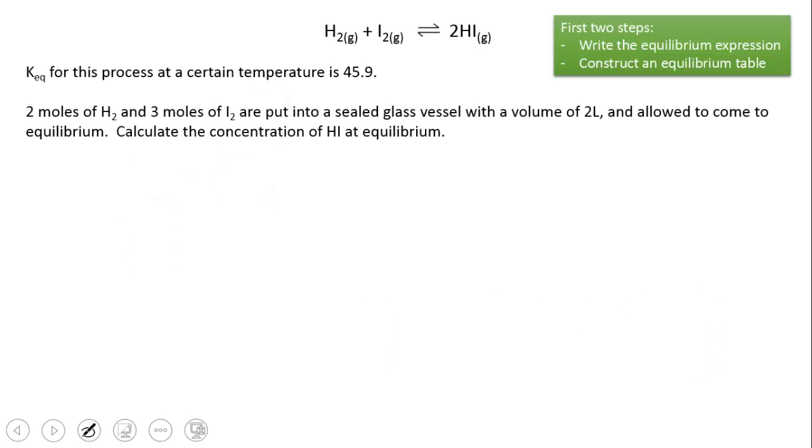We've got the equilibrium between hydrogen, iodine, and hydrogen iodide. Keq for this process at a certain temperature is 45.9. Two moles of hydrogen and three moles of iodine are put into a sealed glass vessel with a volume of 2 liters and allowed to come to equilibrium. Calculate the concentration of hydrogen iodide at equilibrium.